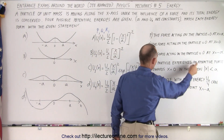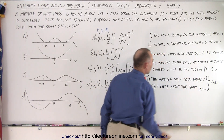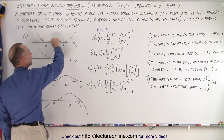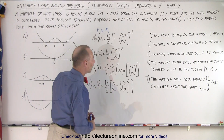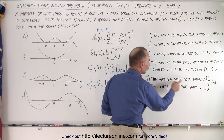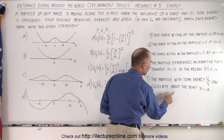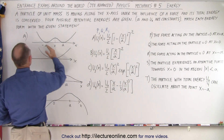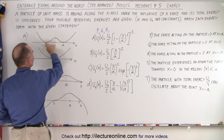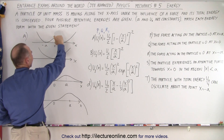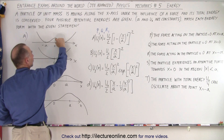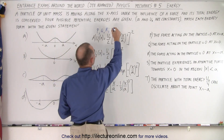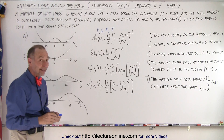Statement S says the particle experiences an attractive force towards x equals zero in the region where x is less than a. For equation A, you need to push the particle toward that region to gain potential energy, so that's not the case. Statement T says the particle with total energy u sub nought over 4 can oscillate about x equals negative a. Since u sub nought over 4 is less than u sub nought over 2, the particle can oscillate back and forth about negative a, so T works. Equation A's answers: P, Q, R, T.